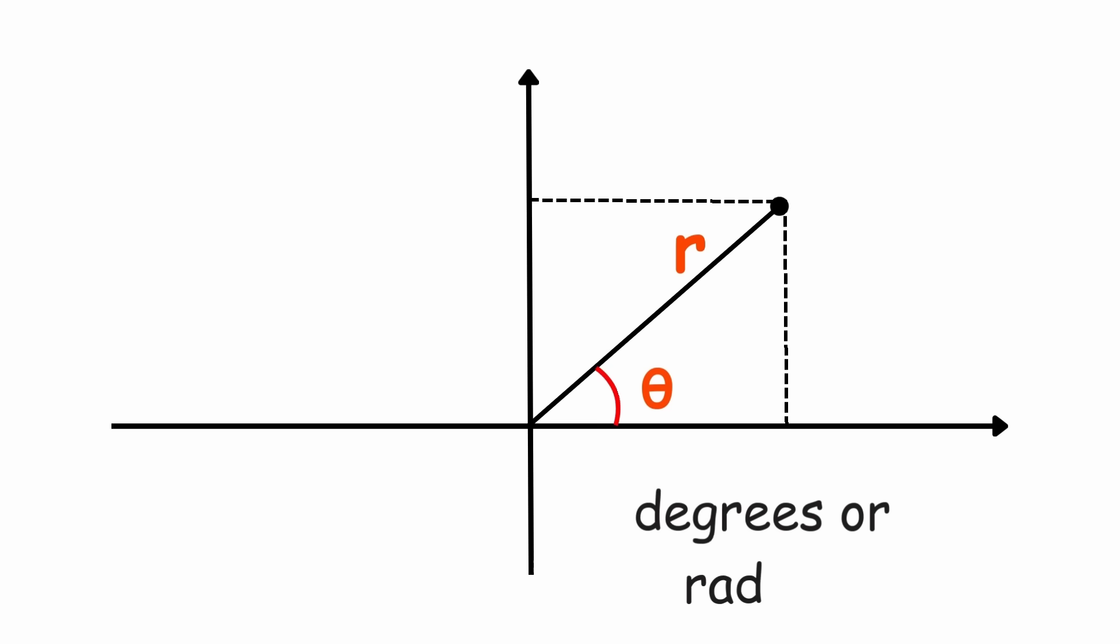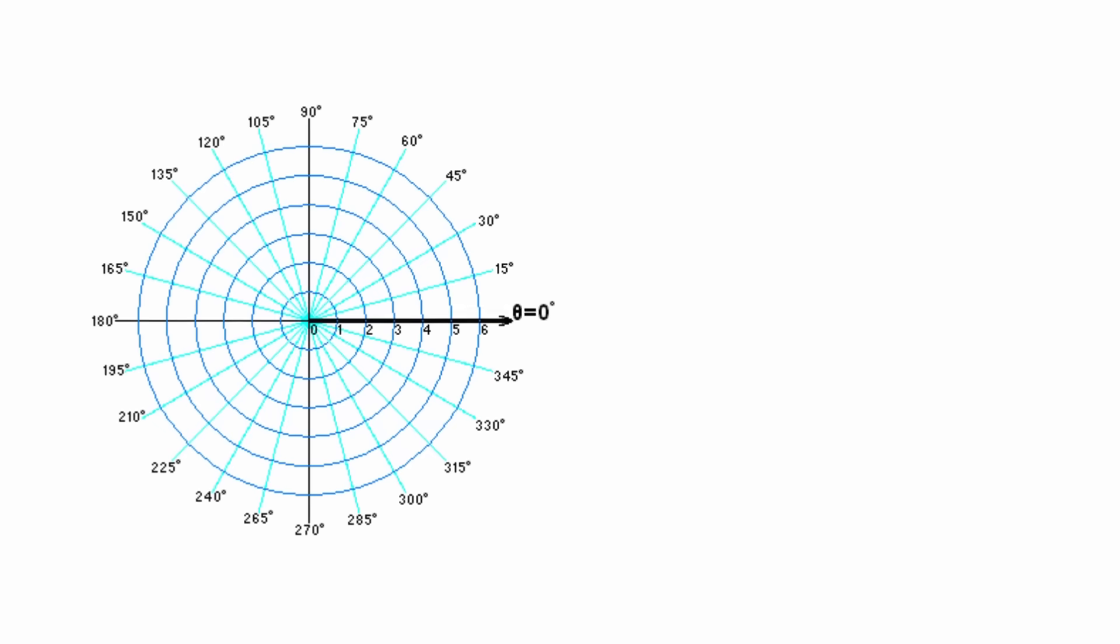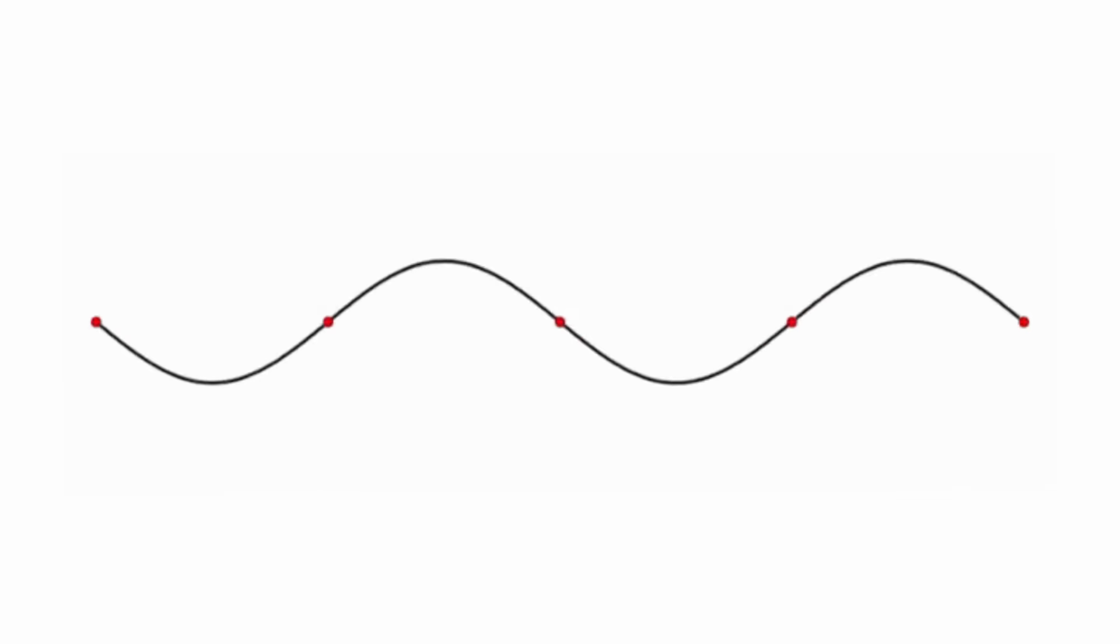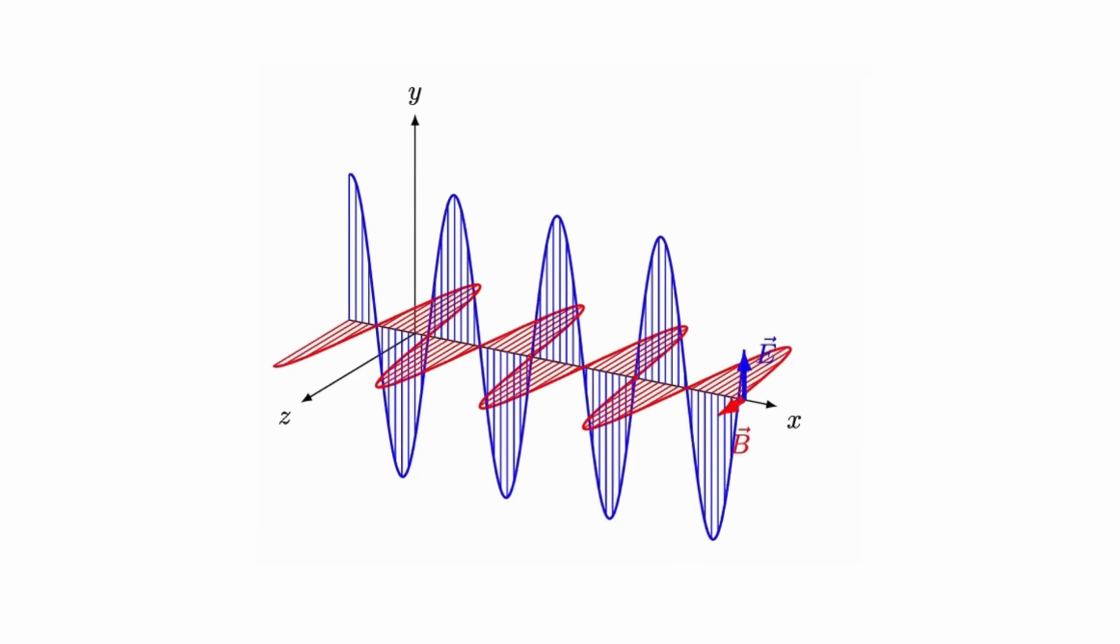Theta is the angle with respect to the polar axis, expressed in degrees or radians. This system is particularly useful in situations where radial symmetry is relevant, such as in the analysis of waves, electromagnetic fields, and circular trajectories.